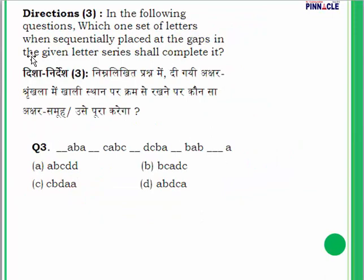Question number 3: we have a series of letters with blanks and must complete the series from the given options. First, count the total number of letters including blanks — there are 20 in total. Now break this into two halves of 10 each, and number both halves 1 through 10.